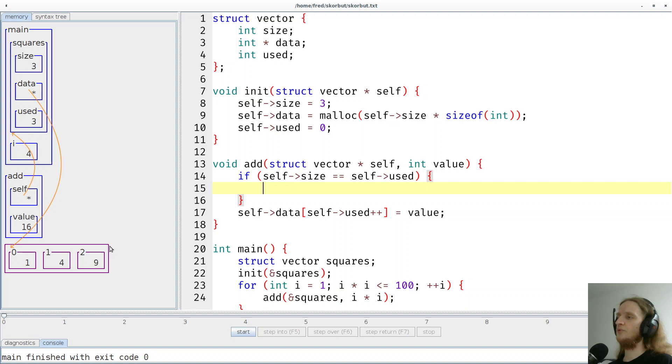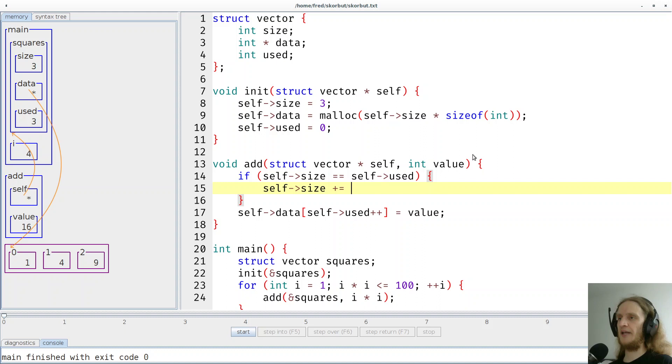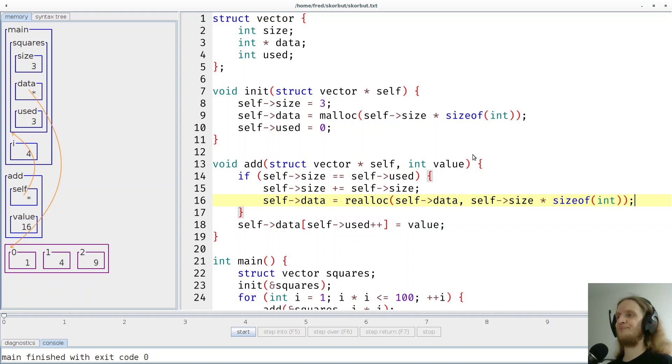So the size, we can simply add the size to itself. That would double it without doubt. And then we can say data should be reallocated. Here is the old array and here is the new size in bytes. So that should already give us some interesting runtime behavior. Let's see.